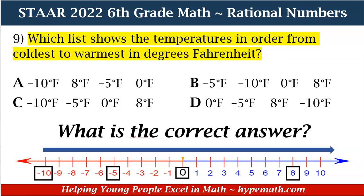In order to find the correct answer, we're going to compare all of the answer choices to see which one lists the numbers in order like we have on our number line. Is it A: negative 10°F, 8°F, negative 5°F, 0°F? B: negative 5°F, negative 10°F, 0°F, 8°F? C: negative 10°F, negative 5°F, 0°F, 8°F? Or D: 0°F, negative 5°F, 8°F, negative 10°F? Which one shows the same order as on our number line? If you said C, you are absolutely correct.